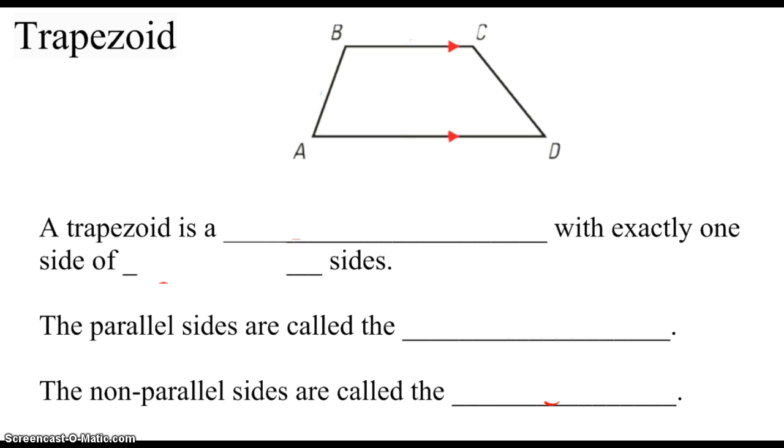A trapezoid is under quadrilateral, but please pay attention, it's next to parallelogram. So a trapezoid is not a parallelogram. Where parallelograms have two sets of parallel lines, a trapezoid is a quadrilateral with one set of parallel lines.